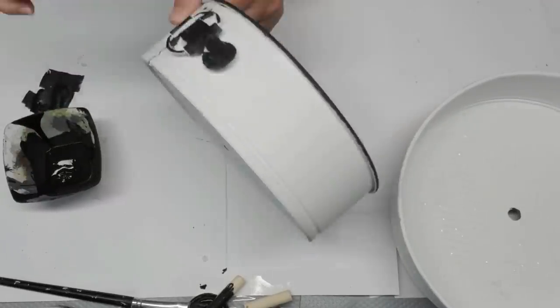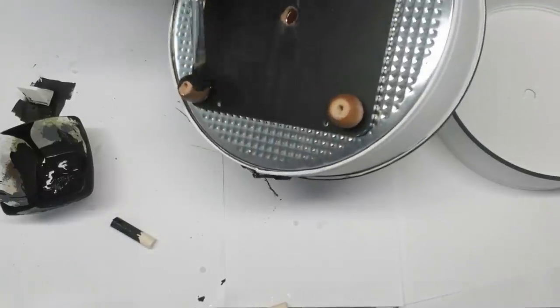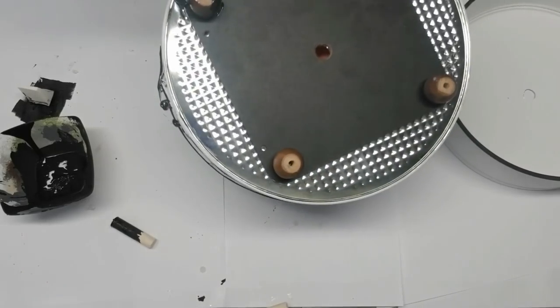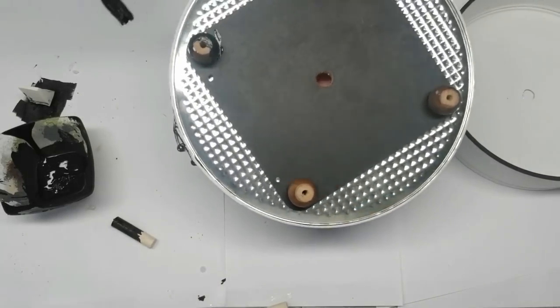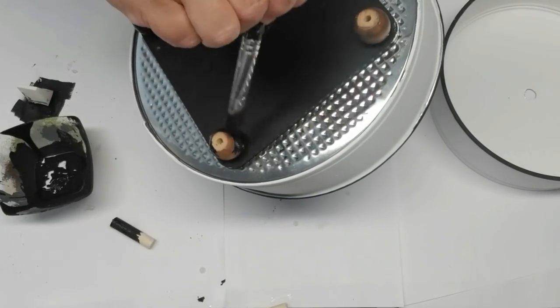I'm also going to paint the hinges and all of that hardware black. Since this bottom pan already had some feet on the bottom I didn't need to add anything but I am just going to paint them black so they match in with the theme of this tray.